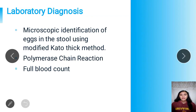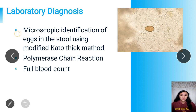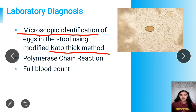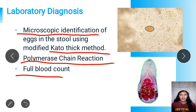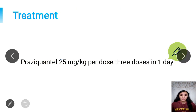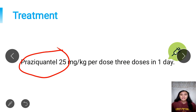For laboratory diagnosis, the definitive diagnosis is through microscopic identification of eggs in the stool using the modified Kato-Katz method. However, care must be taken since the eggs of heterophaeids closely resemble those of Clonorchis and Opisthorchis. In cases of light-intensity infection, polymerase chain reaction (PCR) may be used. A full blood count could also be used since heterophaisis has a high degree of eosinophilia. For treatment, praziquantel is the best treatment of choice, given at 25 mg per dose three times a day.